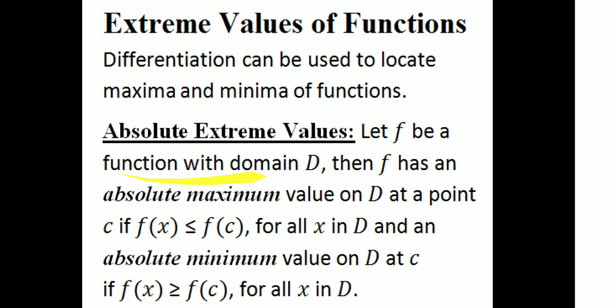Let f be a function with the domain D. Then f has an absolute maximum value on D at a point c if f(x) ≤ f(c) for all x in D, and an absolute minimum value on D at c if f(x) ≥ f(c) for all x in D. Then c is called the absolute maximum point or absolute minimum point.